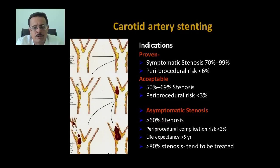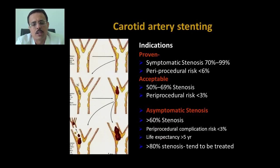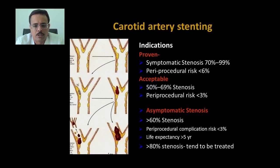What are the indications in the guidelines? In patients with proven symptomatic stenosis more than 70%, if the procedural risk is less than 6%, you should go ahead. More than 50% is considered acceptable provided your risk is less than 3%. In asymptomatic stenosis, more than 60% with risk less than 3%, we can do stenting. However, usually we like to treat asymptomatic stenosis when it is more than 80%.